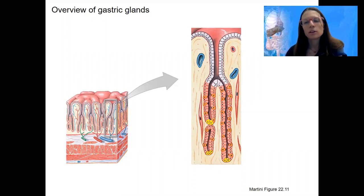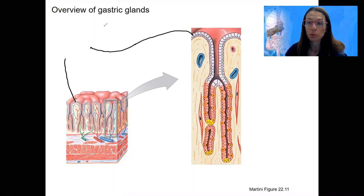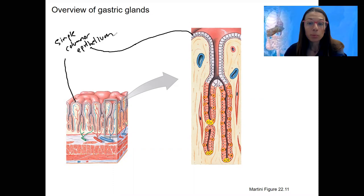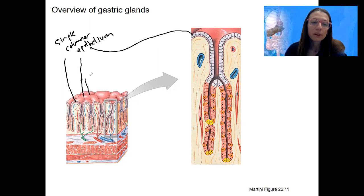We're going to zoom in to that simple columnar epithelium that lines the stomach. It's this stuff right here, and all along you can see it dip down into the gastric gland of the stomach. This is simple columnar epithelium with goblet cells and a bunch of mucous cells. It's very protective up here — the stomach does not digest itself because of this protective layer. There are just layers of alkaline mucous that keep the stomach from digesting itself.